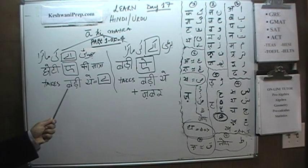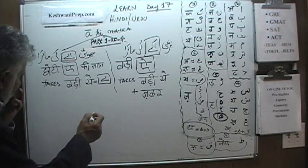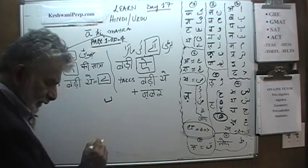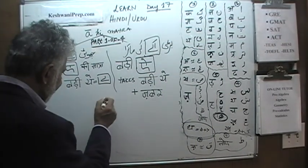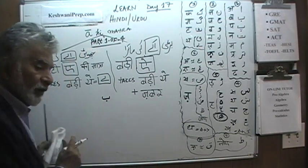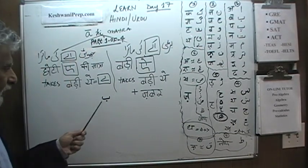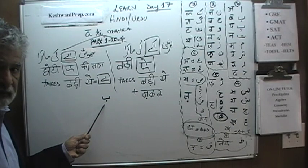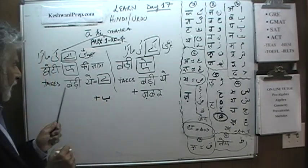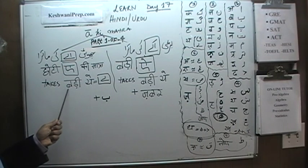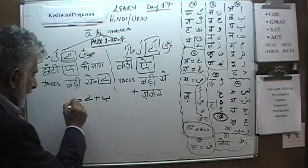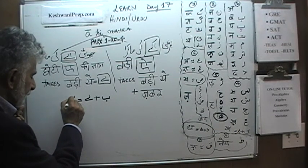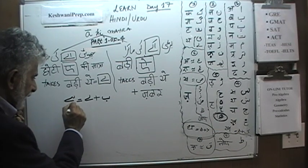Choti Aki Matra takes Badi Ye. In Urdu, for example, if you have the letter B — the name of the letter itself is B — and you want to convert B into a 'Be' sound, you take an Urdu letter called Badi Ye and combine it with B. When they combine, it looks like this: here's your B and here's your Badi Ye, and it becomes 'Be'.